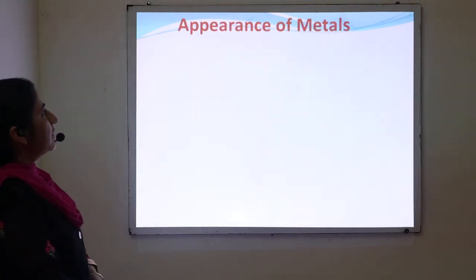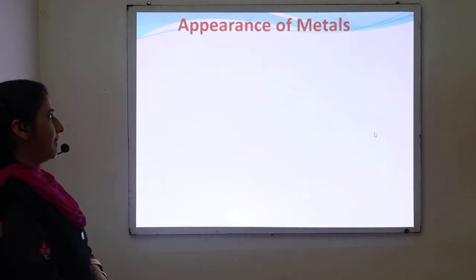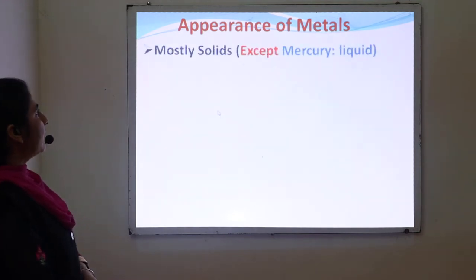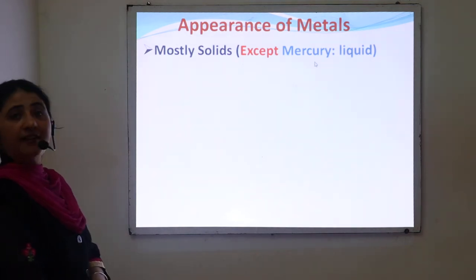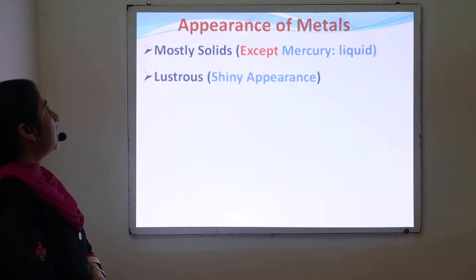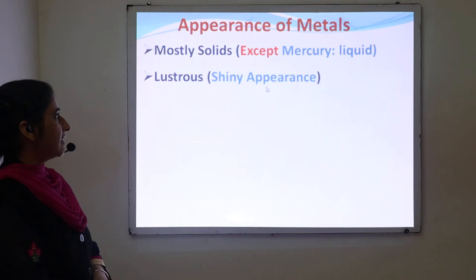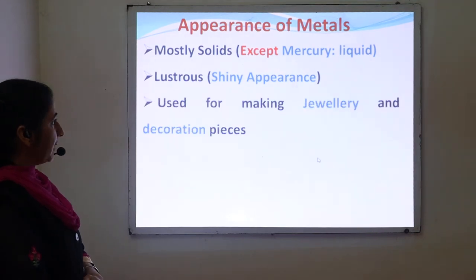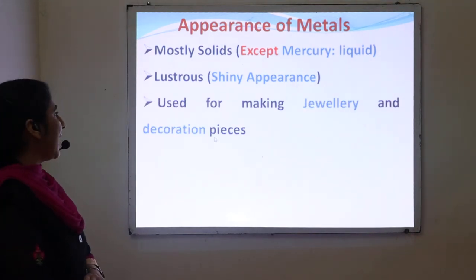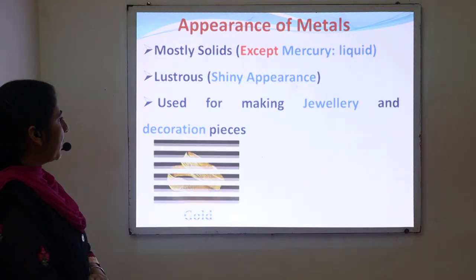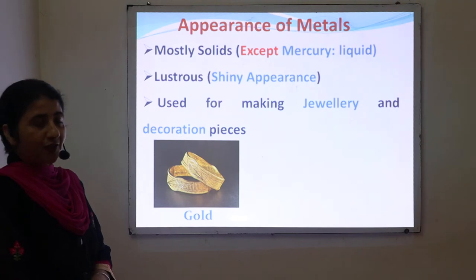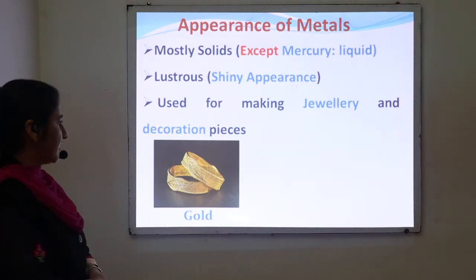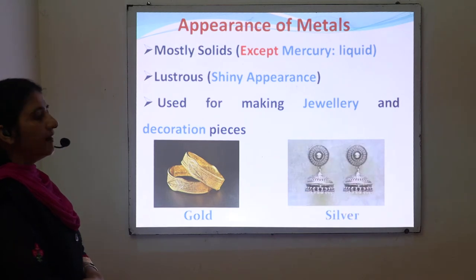The first physical property of metals is appearance. Generally, metals are mostly solid, except mercury which exists in liquid form. Metals are generally lustrous, meaning they have a shining appearance. Due to their shining appearance, they are used for jewelry and decoration pieces. For example, gold and silver are used for jewelry articles such as bangles and earrings.